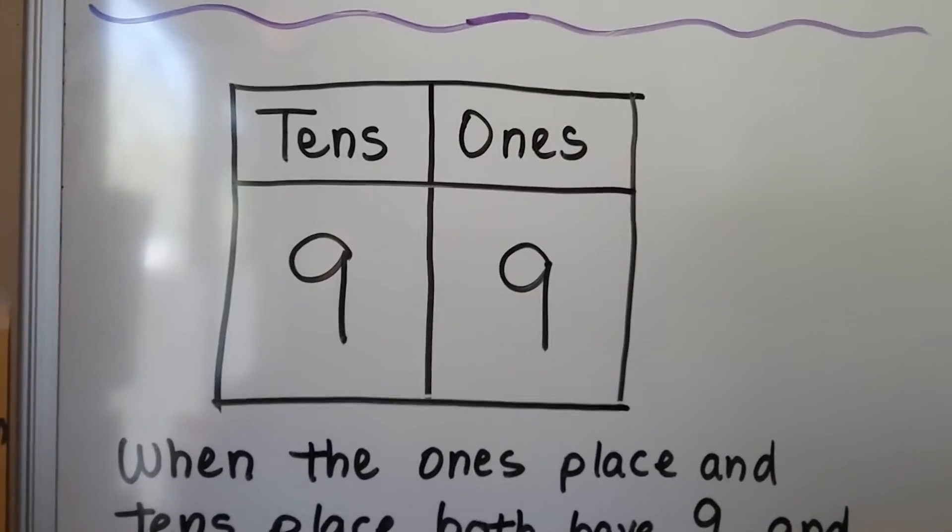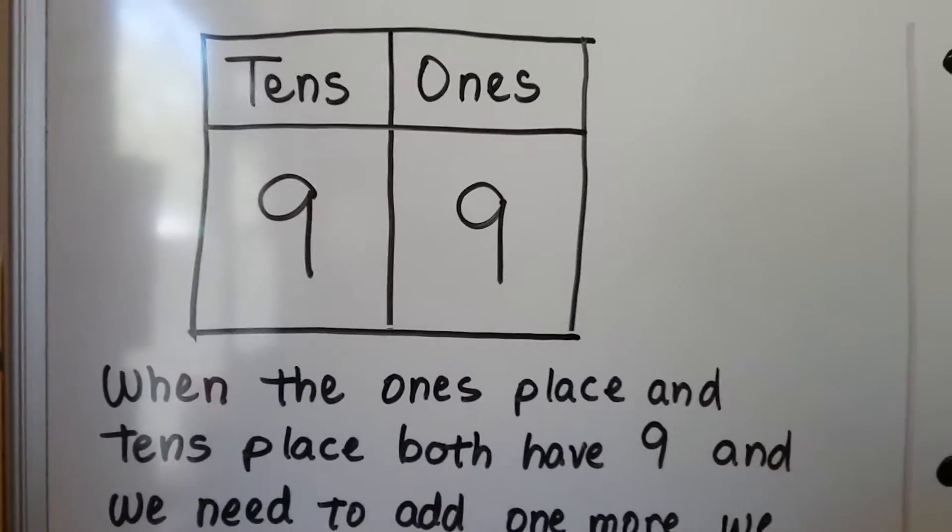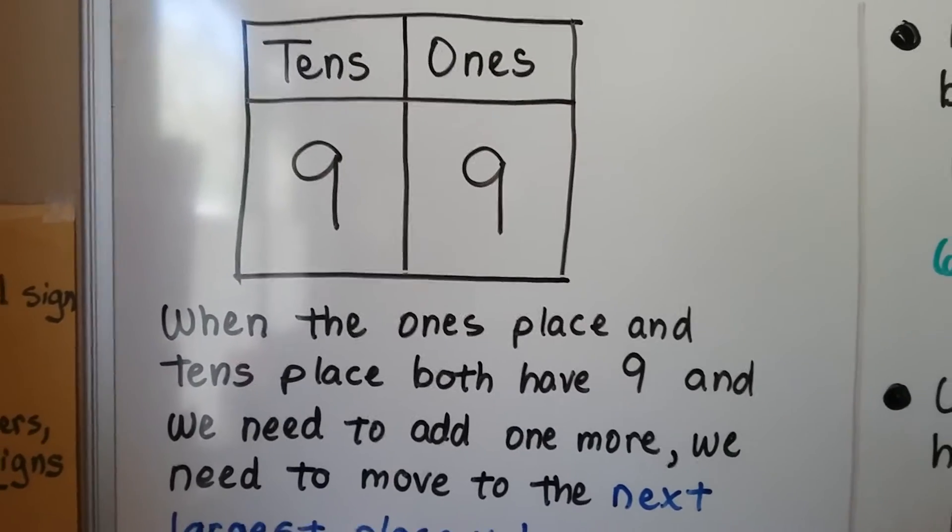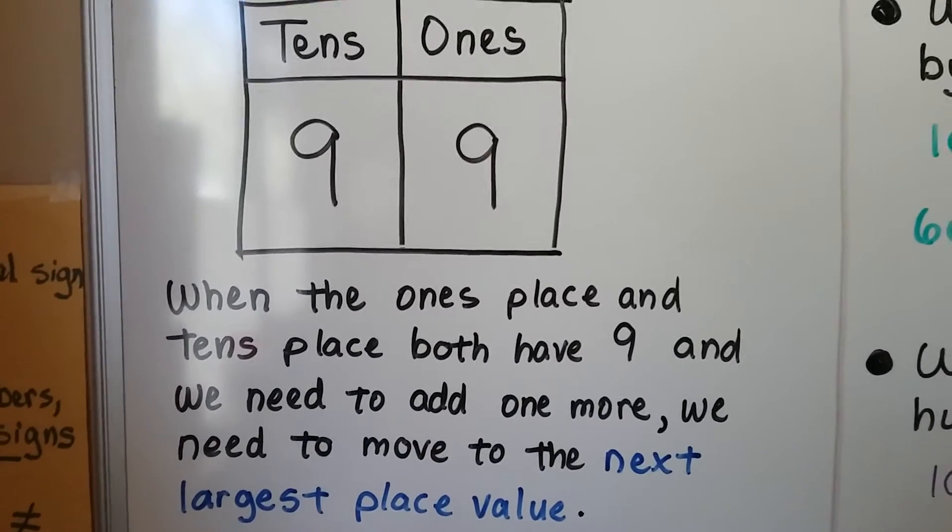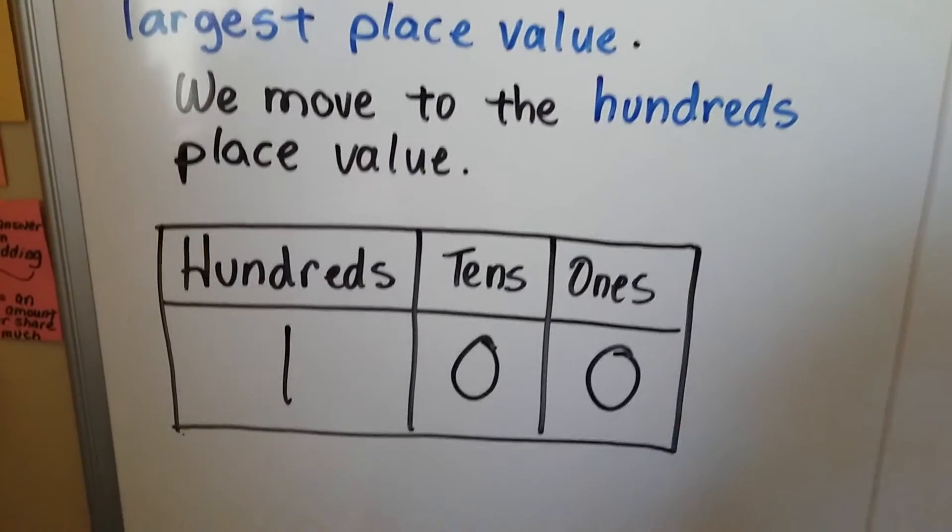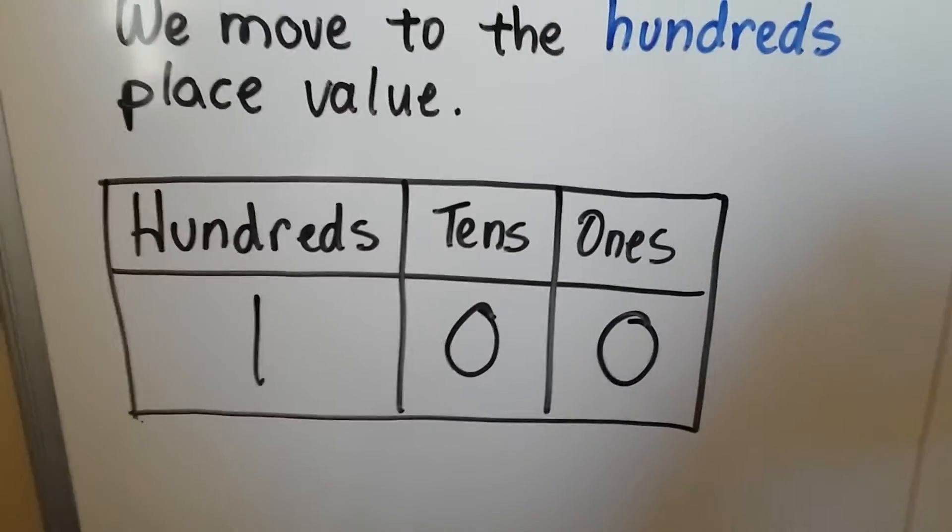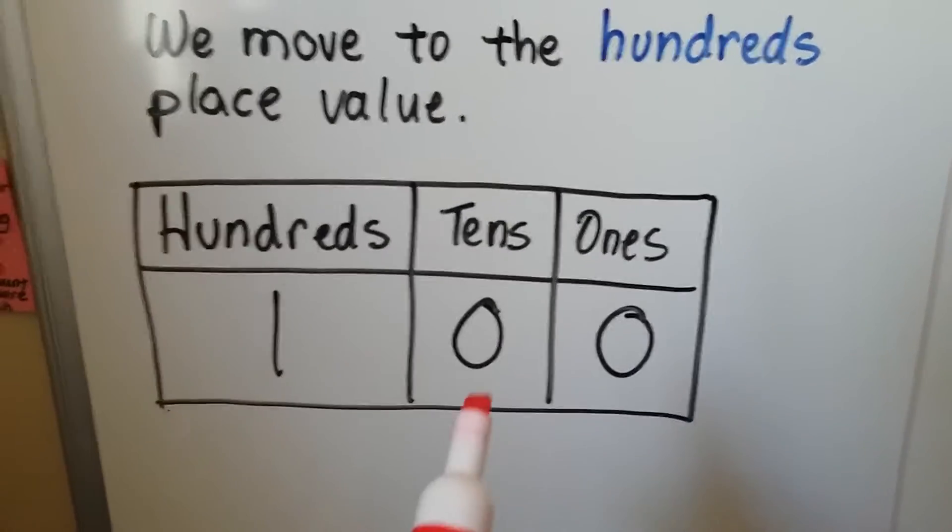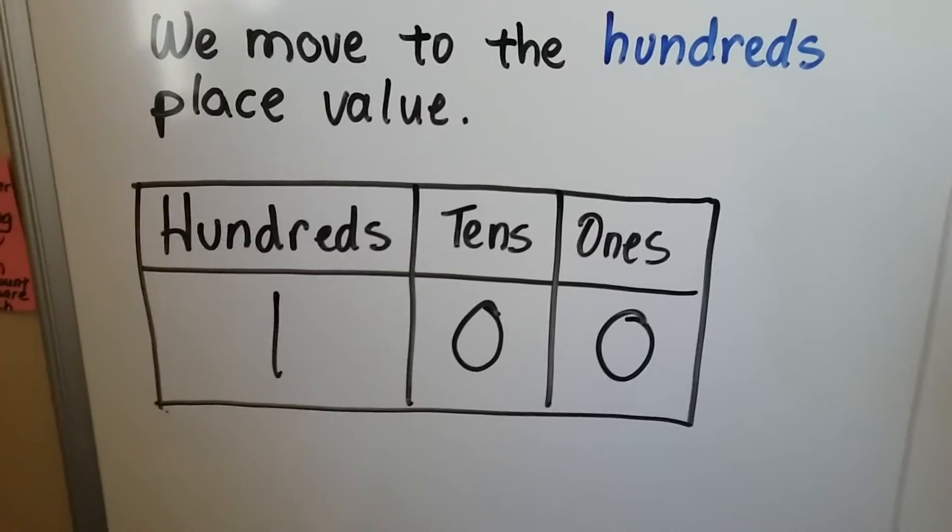We've learned about tens and ones. We know when the ones place and the tens place both have a nine, and we need to add one more, we need to move to the next largest place value. We move to the hundreds place value. One more than 99 is 100. You can see there's 0 ones, 0 tens, and there's a 1 in the hundreds place.